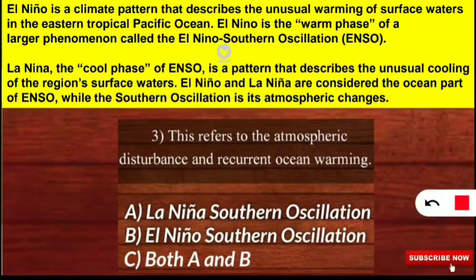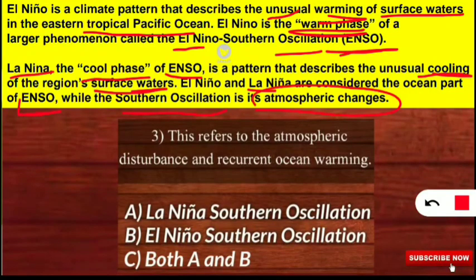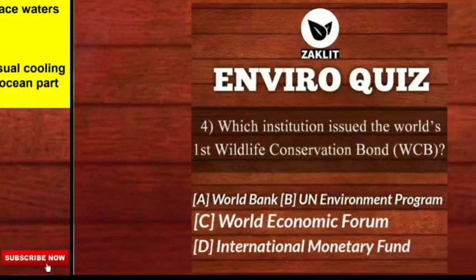El Niño is a climatic pattern that describes the unusual warming of surface water in the eastern tropical Pacific Ocean. El Niño is also called the warm phase of ENSO — El Niño Southern Oscillation. La Niña is called the cool phase of ENSO, describing the unusual cooling of the region's surface water. El Niño and La Niña are considered the ocean part of ENSO, while the Southern Oscillation refers to its atmospheric changes. Option B is the correct answer.